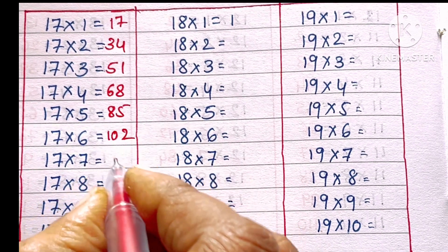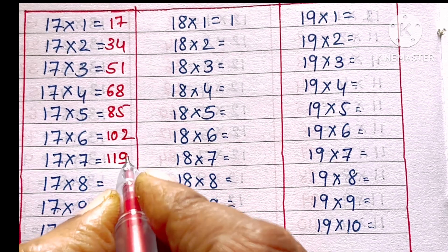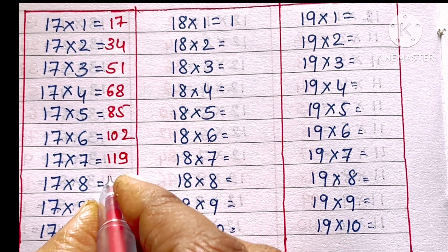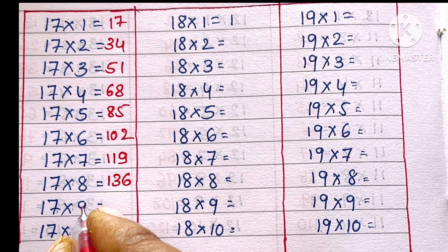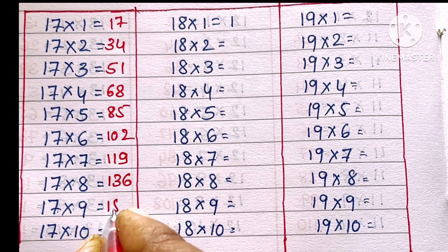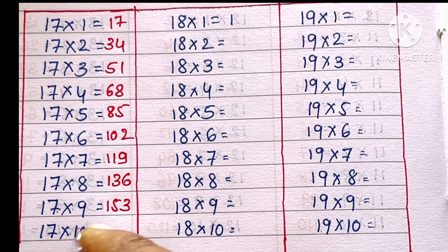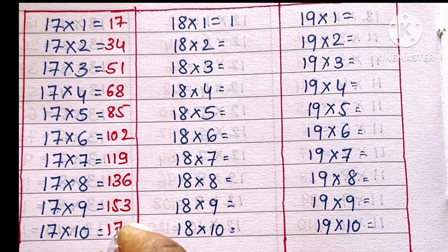17 sevens are 119, 17 eights are 136, 17 nines are 153, 17 tens are 170.